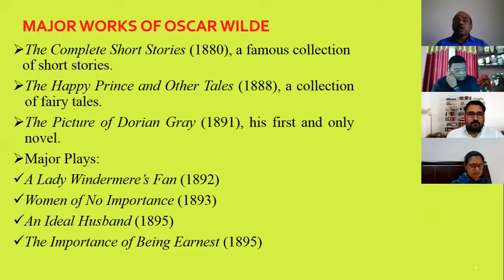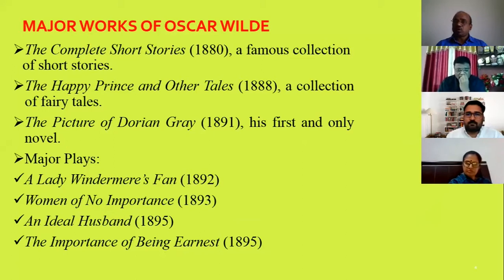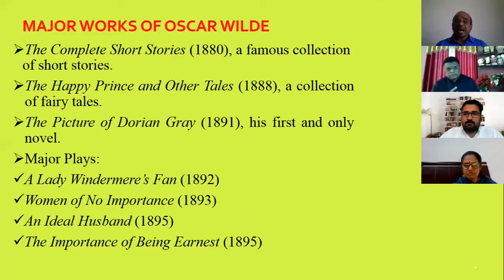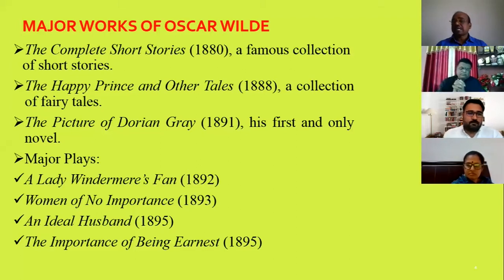Major works of Oscar Wilde include 'The Complete Short Stories,' a famous collection. 'The Happy Prince and Other Tales,' 1888, a collection of fairy tales — from this collection, 'The Happy Prince' is in our second-year syllabus. 'The Picture of Dorian Gray,' 1891, his first and only novel. Major plays include 'Lady Windermere's Fan' (1892), 'A Woman of No Importance' (1893), 'An Ideal Husband' (1895), and 'The Importance of Being Earnest' (1895). These are significant contributions given by Oscar Wilde in literature.